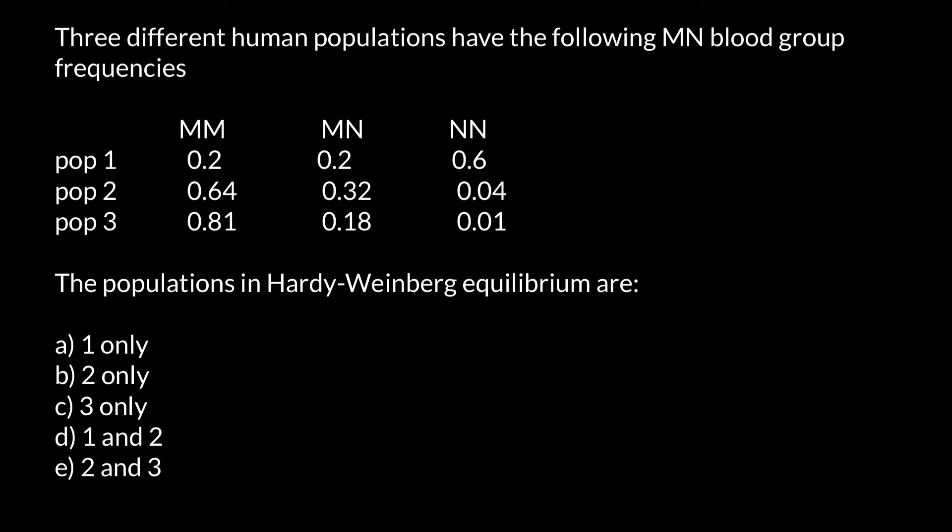Hello and welcome to Nikolai's genetics lessons. Today's problem: three different human populations have the following MN blood group frequencies. As you know, there are three important blood systems: the ABO blood group system, the Rh positive and negative factor, and the MN blood system, where we have two alleles — allele M and allele N.